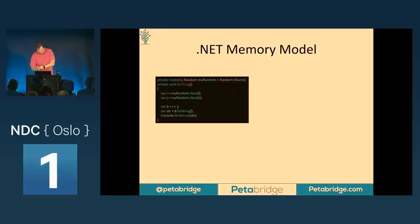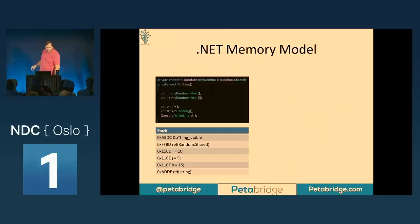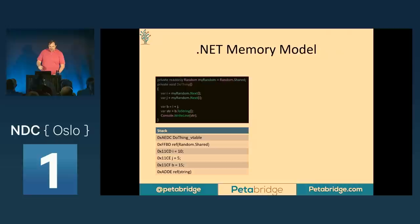Let's take a look at the .NET memory model with a little piece of code. Inside a class, I have a private read-only field that accesses the Random.Shared property — a static type built into .NET 6 — so that is going to be a Gen 2 garbage-collected object. Inside this method, we use that random to generate two integers. Integers are value types, so they belong on the stack — they're not even going to get garbage collected. They're simply released as the function exits the stack once it completes.